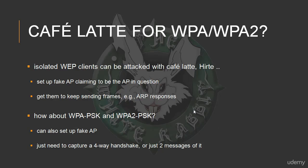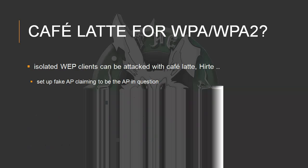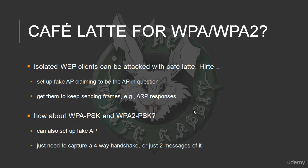Let's take a look at isolated clients and the technical challenge of trying to get the client to reveal certain information you can then use to run dictionary attacks on. With WEP clients, they can be attacked with Cafe Latte and similar techniques. The idea is to set up a fake access point claiming to be the access point in question — you know the ESSID, then set up a fake access point with something like AirBase-NG. Once the client tries to connect and associate, you can induce it to keep sending frames using the WEP key with multiple IVs, for example by sending fake ARP requests and getting the client to send ARP responses.